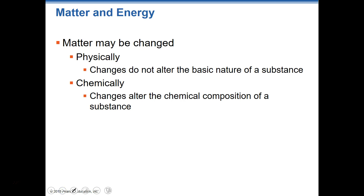Matter can be changed. We can physically change it, but when we physically change it, it doesn't necessarily alter the basic nature of a particular substance. Chemical changes, however, do alter the composition of a substance. So there are two types of changes — physical and chemical. Physically, it doesn't really alter the nature of the substance, but chemically it does alter the nature of that particular substance.